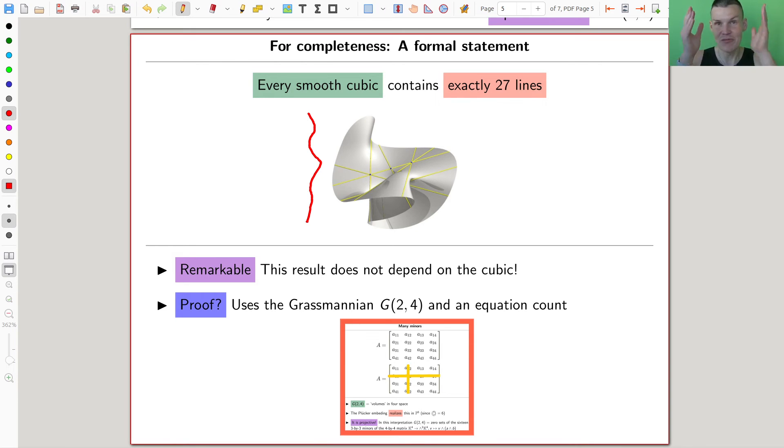So the result is remarkable, right? The result does not depend on the cubic, it's just always 27. Ridiculous. So you send the cubic via Plucker coordinates in the Grassmannian, and you count in the Grassmannian, that's what you can do, and it's just remarkable, it's just absolutely remarkable.